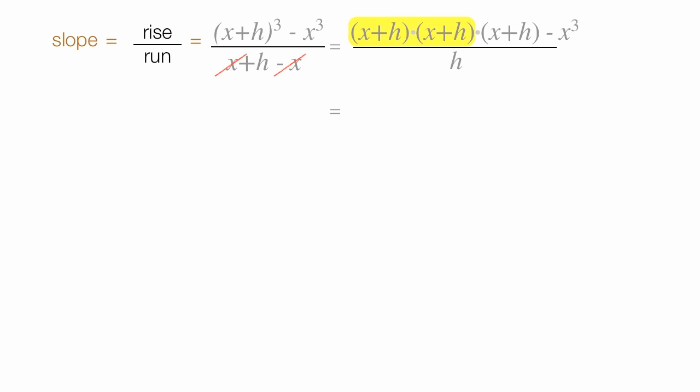If I multiply x plus h times x plus h, I get x squared plus 2xh plus h squared. Now I'll multiply this times x plus h, and I'll subtract off again x cubed, divided by h.